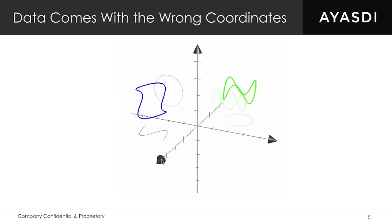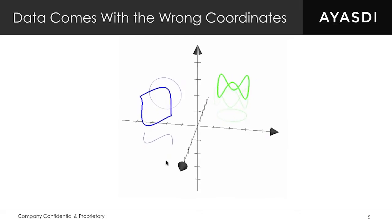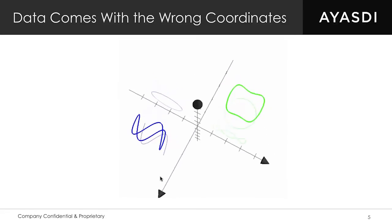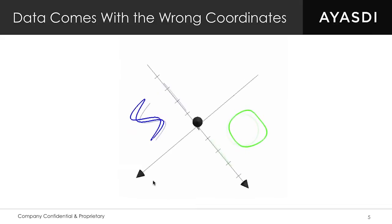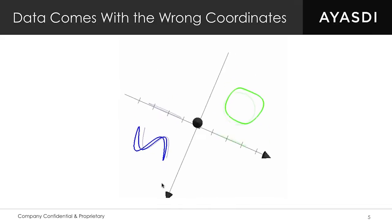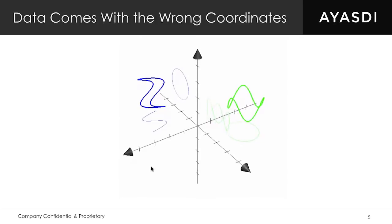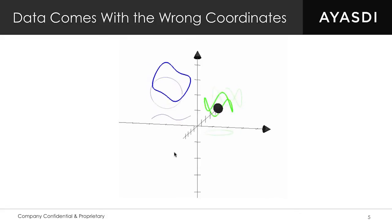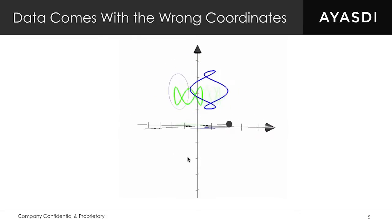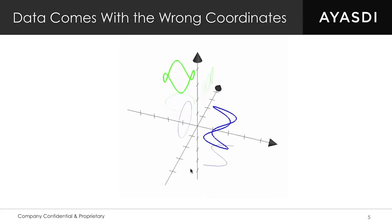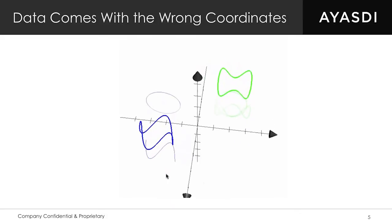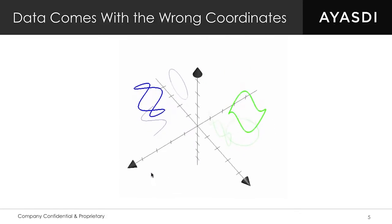What does it look like when data comes to you with the wrong coordinates? I'll argue that it obscures the shape. This data actually has a really simple shape — it's two circles. There's a blue circle, and if you look from the right angle you see the blue circle; there's a green circle, and if you look from the right angle you see the green circle. But there's no angle from which you see both circles at the same time — no way to project this data to show two circles simultaneously. But fundamentally that's what's there, and if you had the right coordinates you would see just two circles.